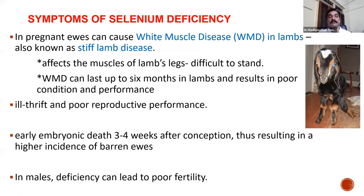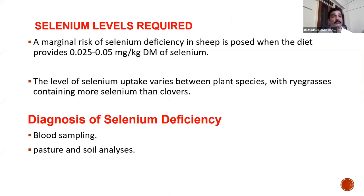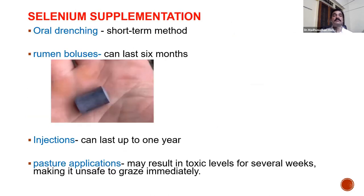A marginal risk of selenium deficiency in sheep is posed when the diet provides 0.025 to 0.05 mg of selenium per kg dry matter. Selenium levels depend on plant species — ryegrasses have more selenium than clovers. Diagnosis is done through blood sampling or pasture and soil analysis. For supplementation, oral drenching is available, rumen boluses can last six months, and selenium injections can last up to one year. Pasture application of selenium may result in toxic levels for several weeks — animals should not graze for up to one month after application.